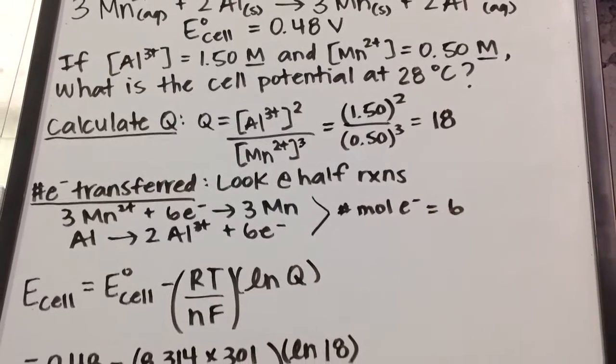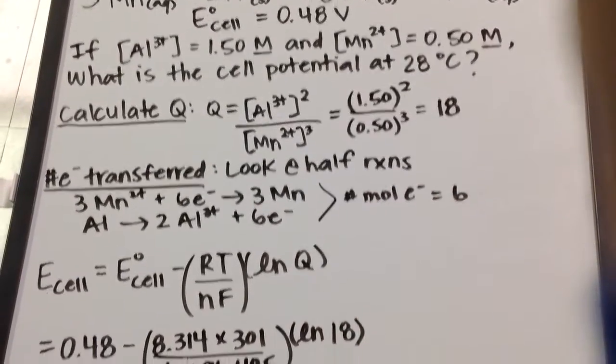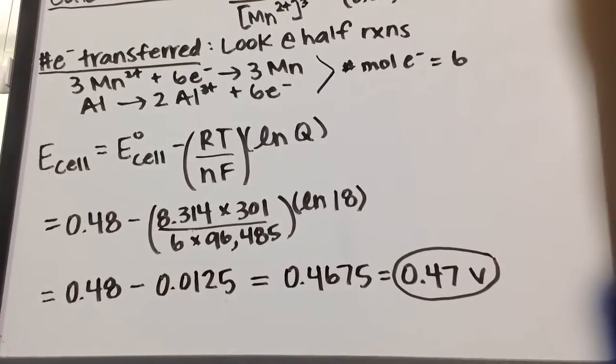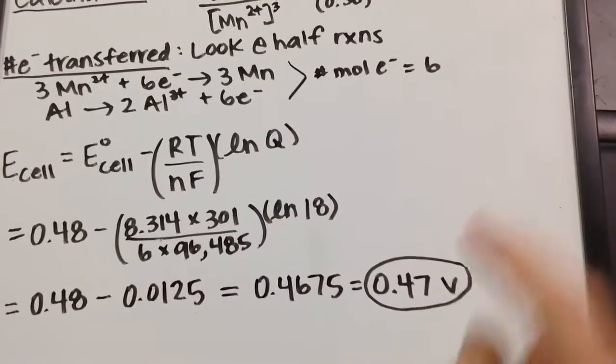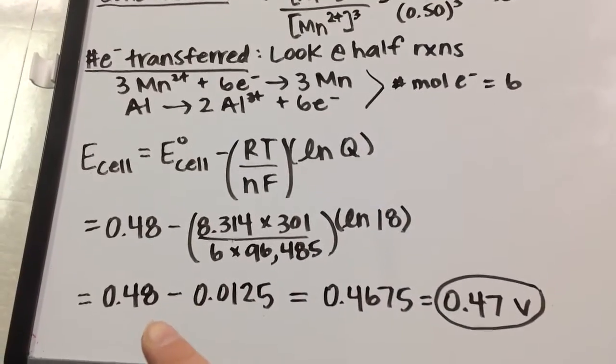1.5 molar and 0.5 molar don't deviate too far from the standard condition of 1 molar, and 28 degrees Celsius doesn't deviate too far from standard temperature. So it makes sense that my non-standard conditions cell potential isn't a whole lot different from standard conditions.